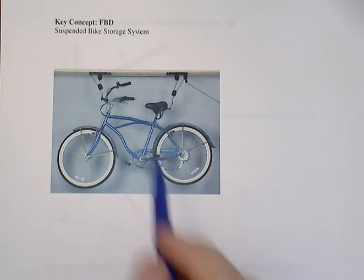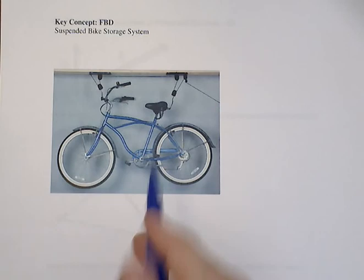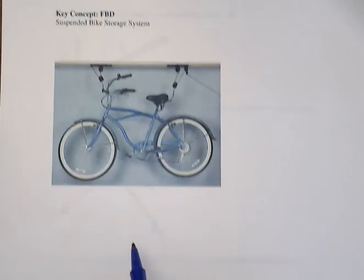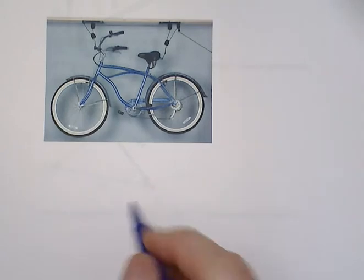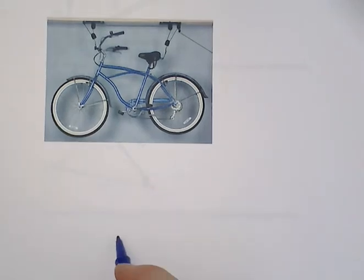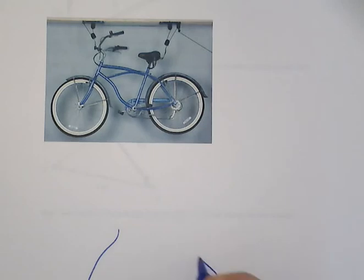So what we're going to do is take this bike and represent it as just a body. You don't have to draw the entire shape of the body. There's only a couple of critical things to get here, so just kind of a really crude outline of the body.